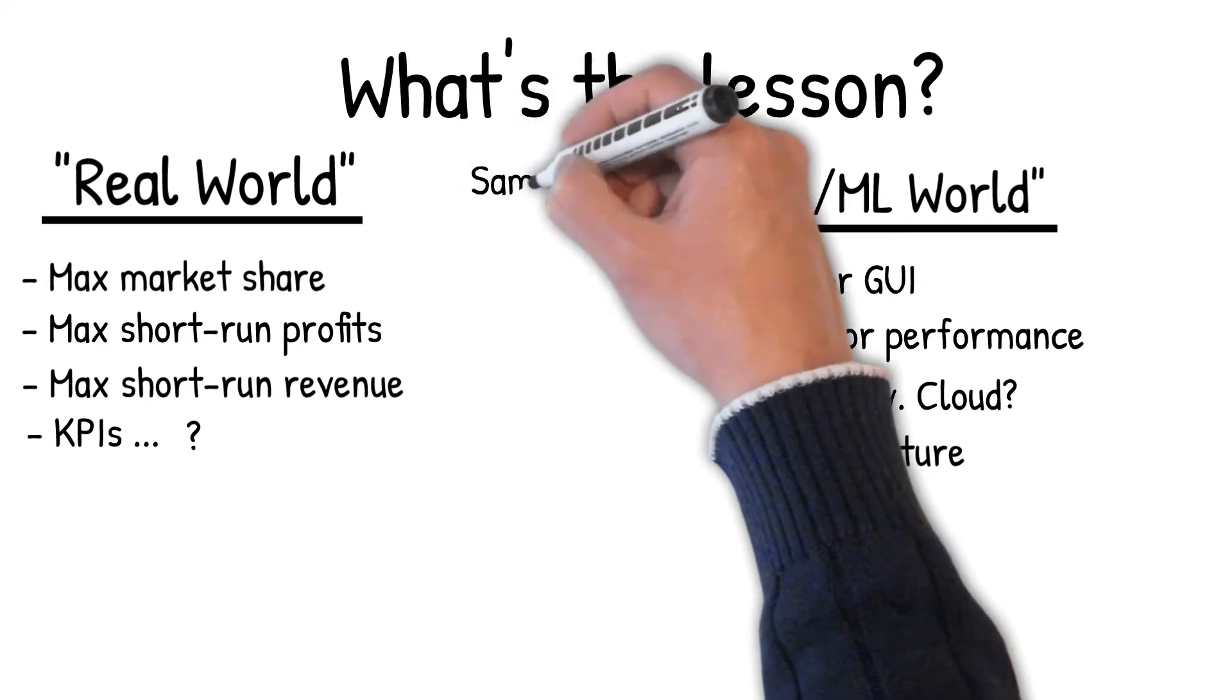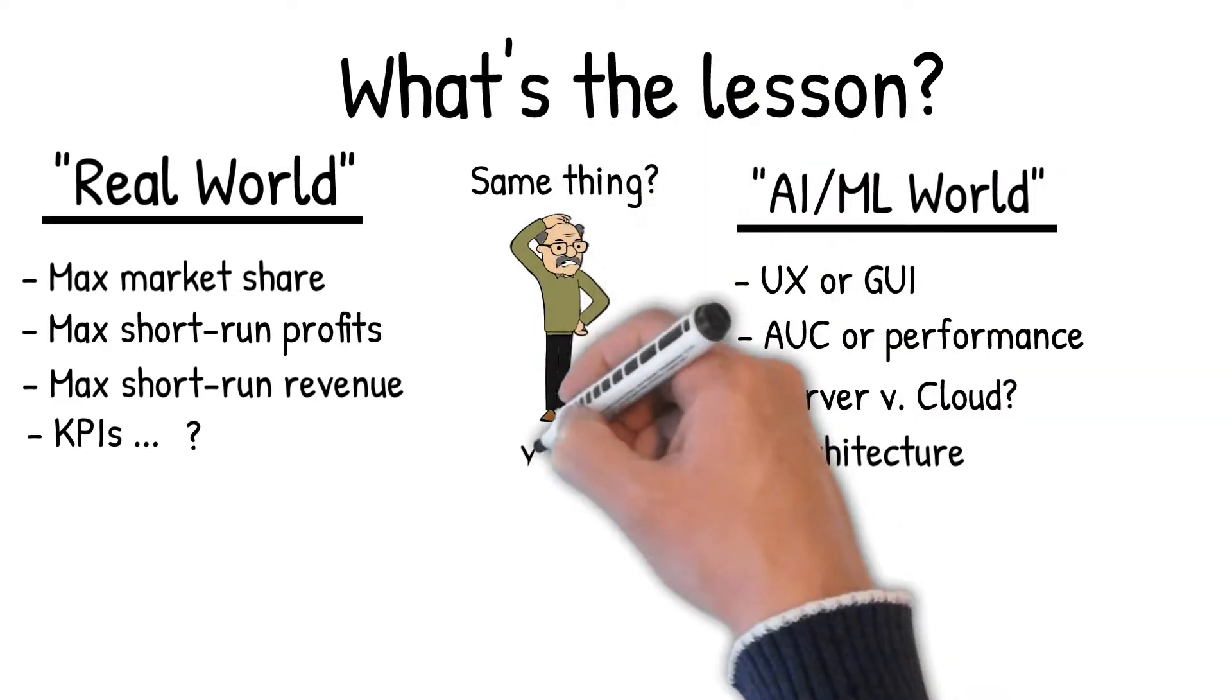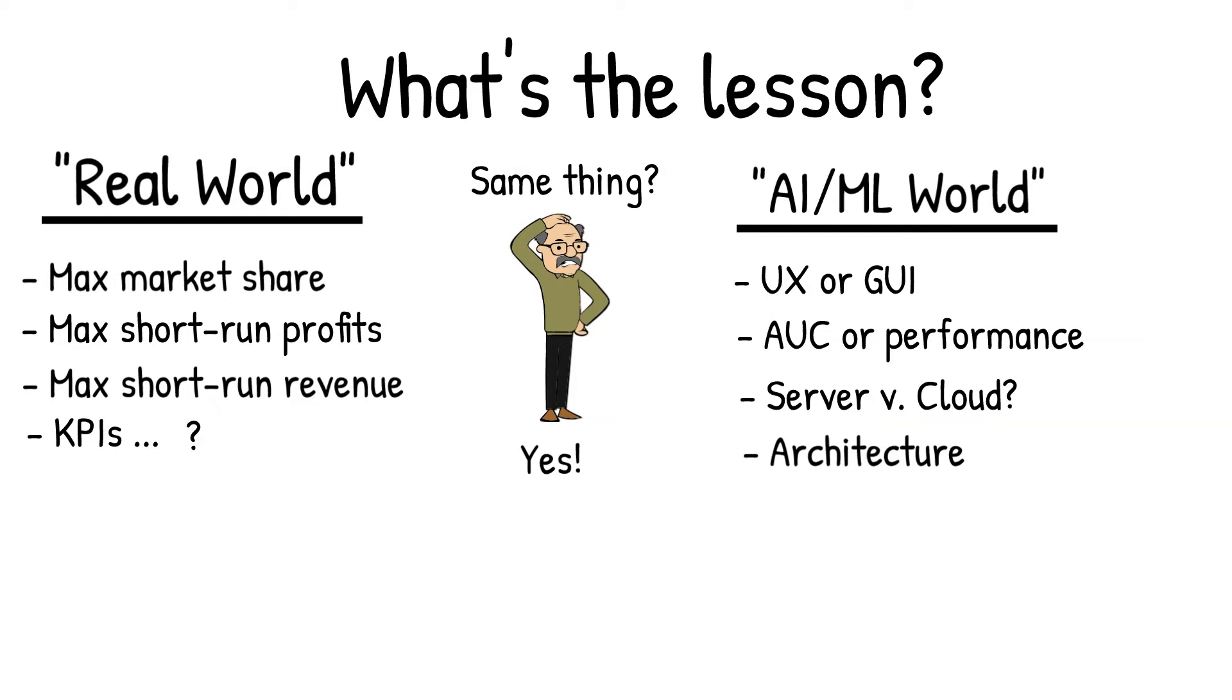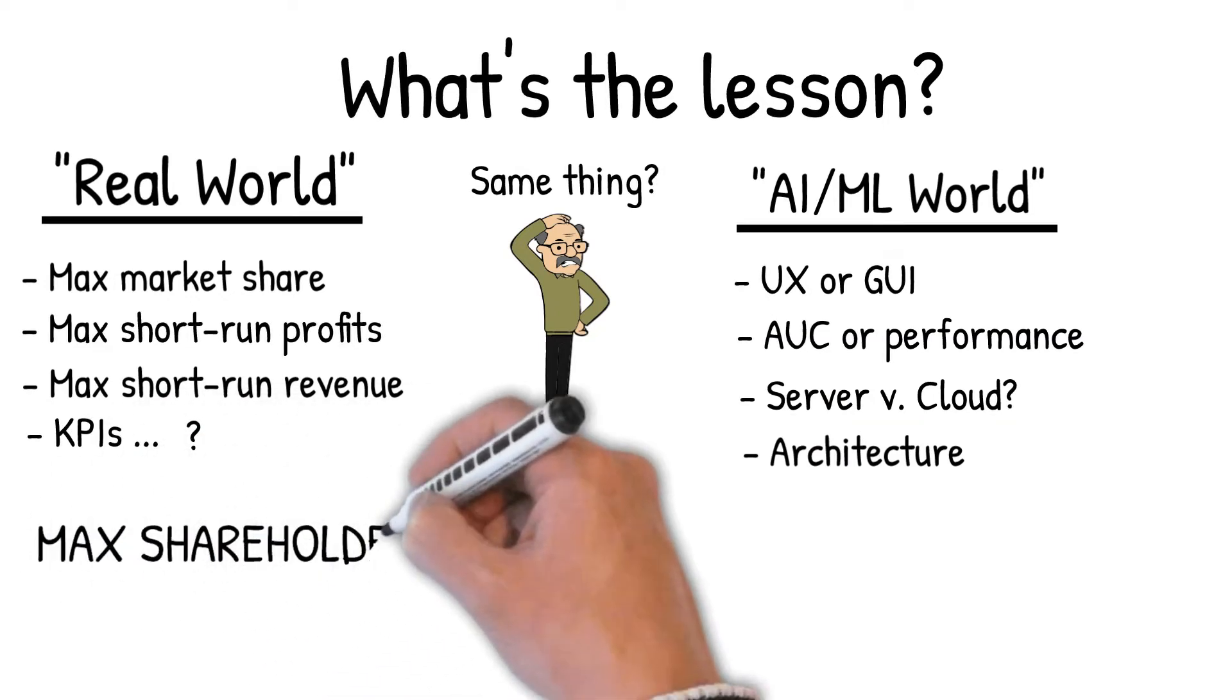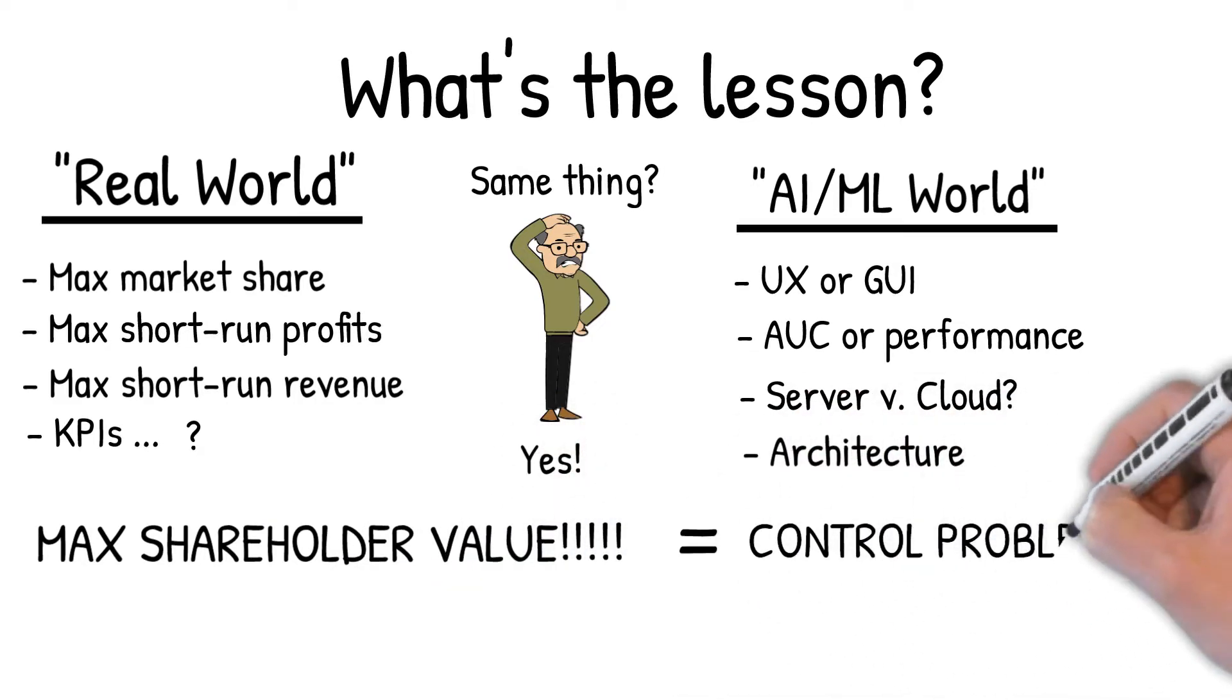When you probe both the managers and the people who are developing applications, what you discover is that both the managers and the developers both think they're maximizing shareholder value. Maximizing shareholder value is actually a machine learning control problem.